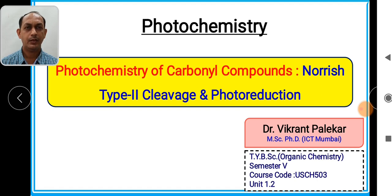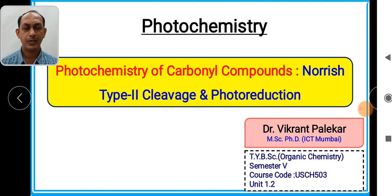This is the fifth lecture we are doing on Photochemistry. In the earlier topics, we have gone through very important terms related with Photochemistry — what is the Singlet State, Triplet State, Allowed Transition, Forbidden Transition, Jablonski Diagram, Photosensitization, and so on. In the earlier part, we have seen Norrish Type 1 cleavage, which is a temperature dependent cleavage observed in ketones. In this lecture, we are going to see mainly the Norrish Type 2 cleavage and photoreduction.